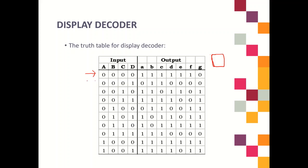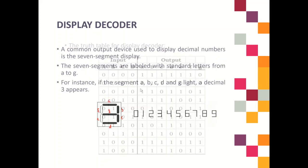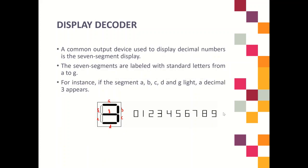For decimal 1, you need to choose among all the segments to make sure it will display exactly like that value. This is the function of the display decoder — it is used to display the decimal value based on the 7-segment display.